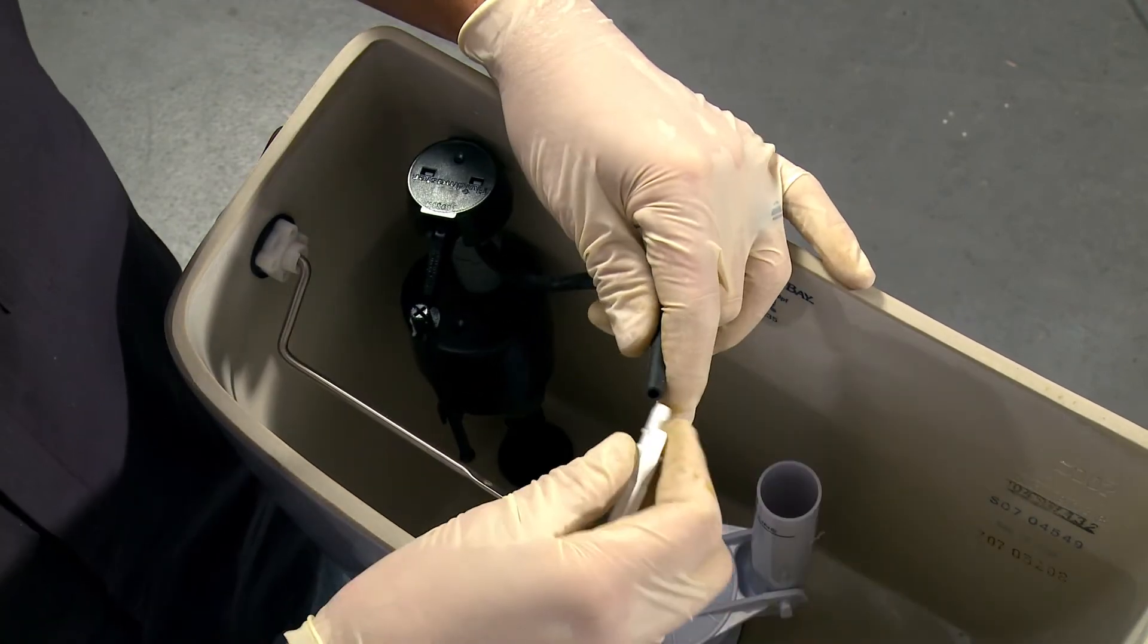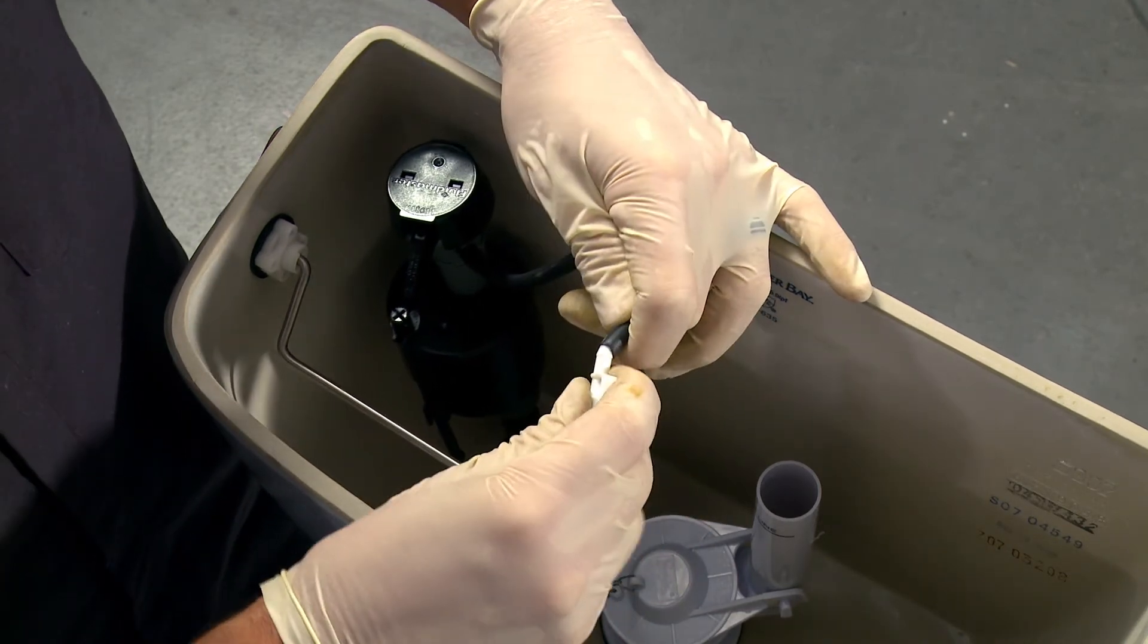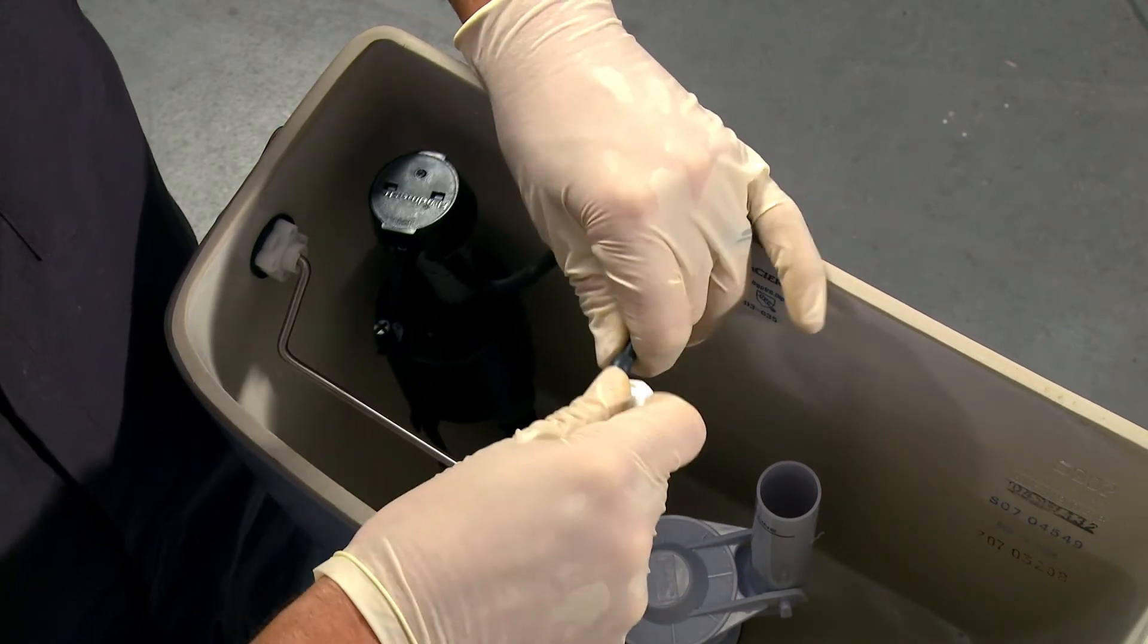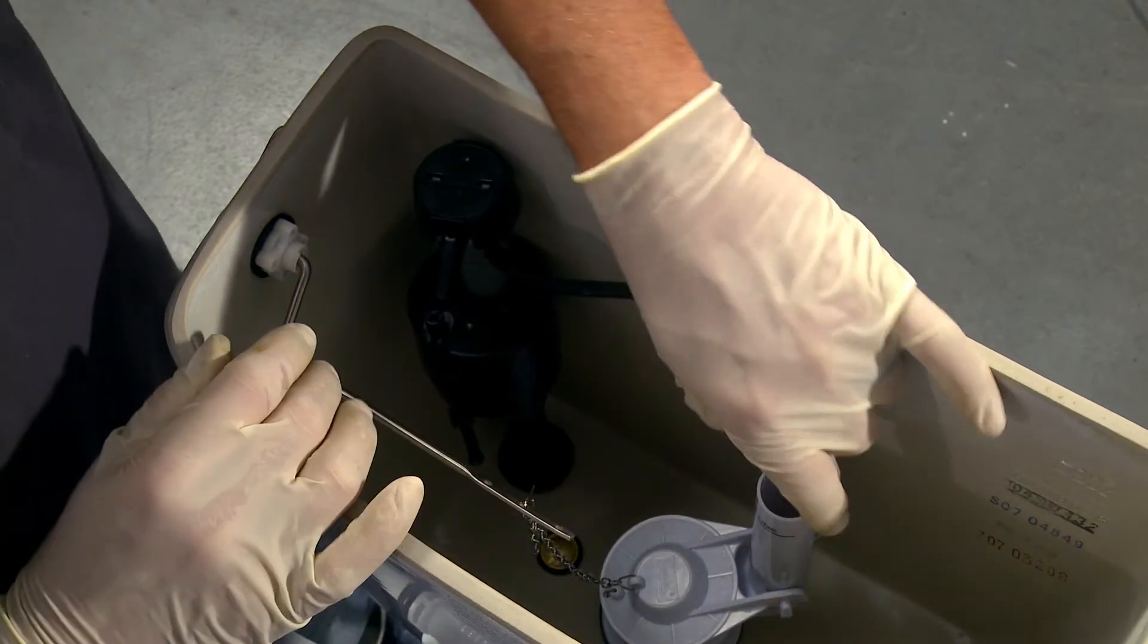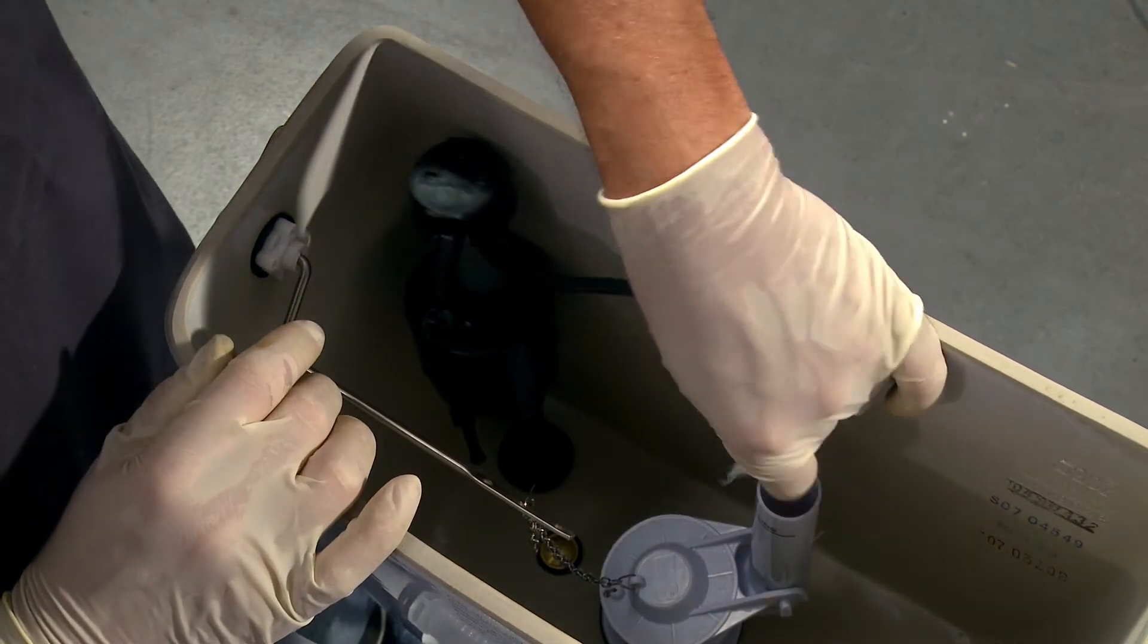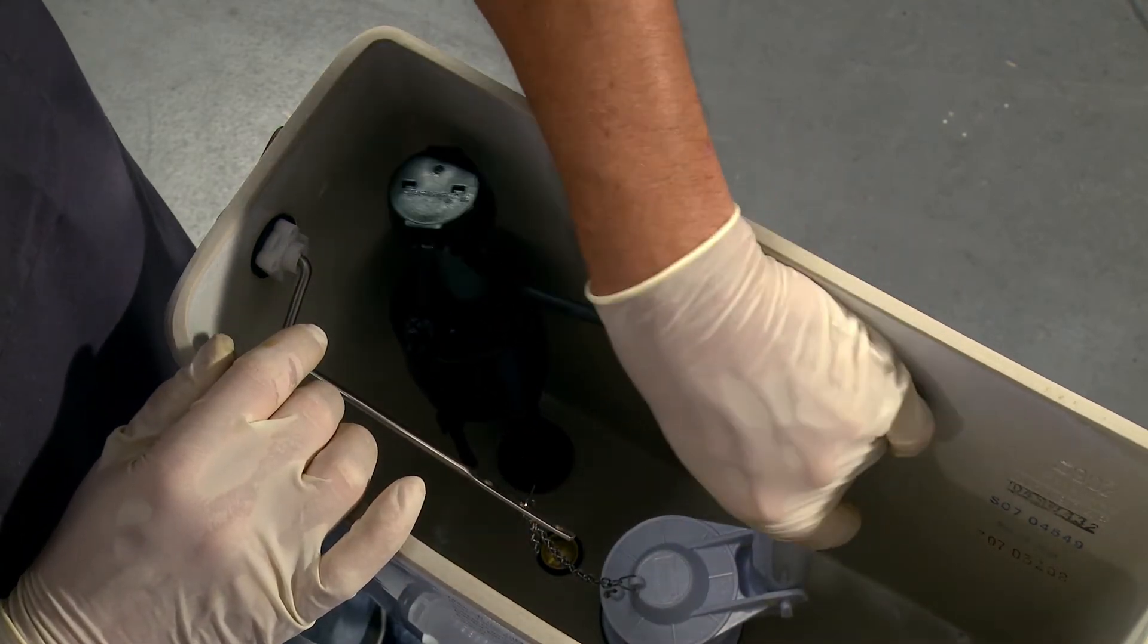I'll take the clip back off so you can see. You're just going to press it into place there. Just like that. Clip it back on the flush valve, like so.